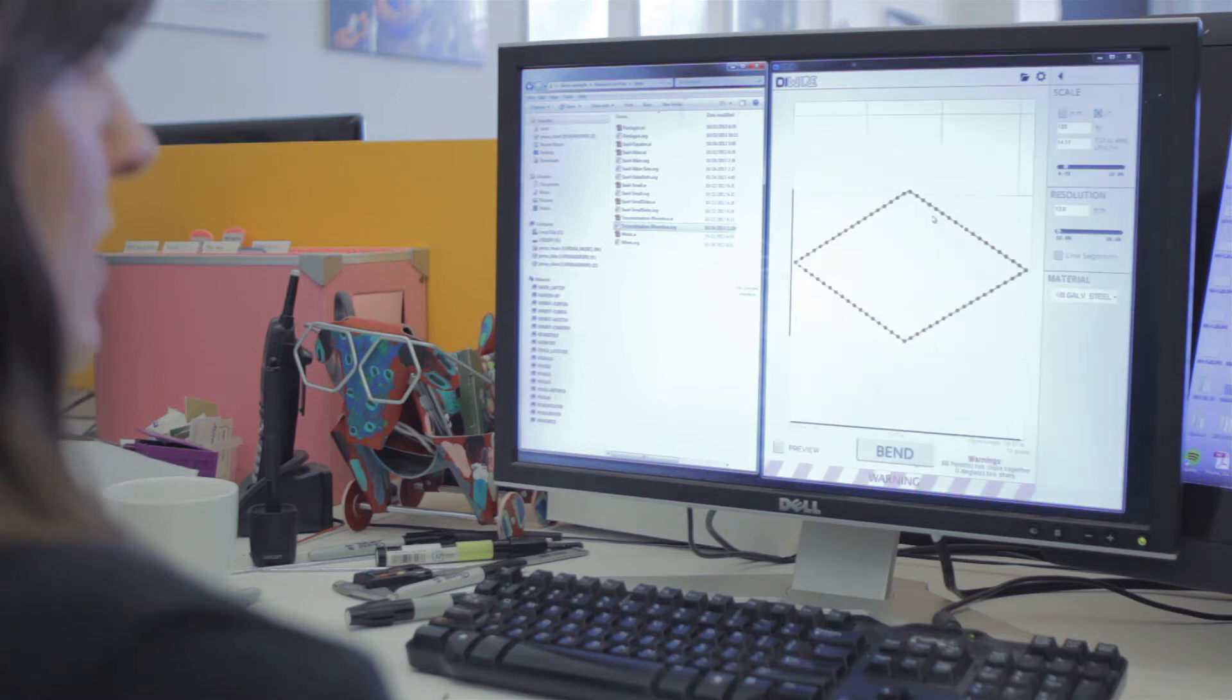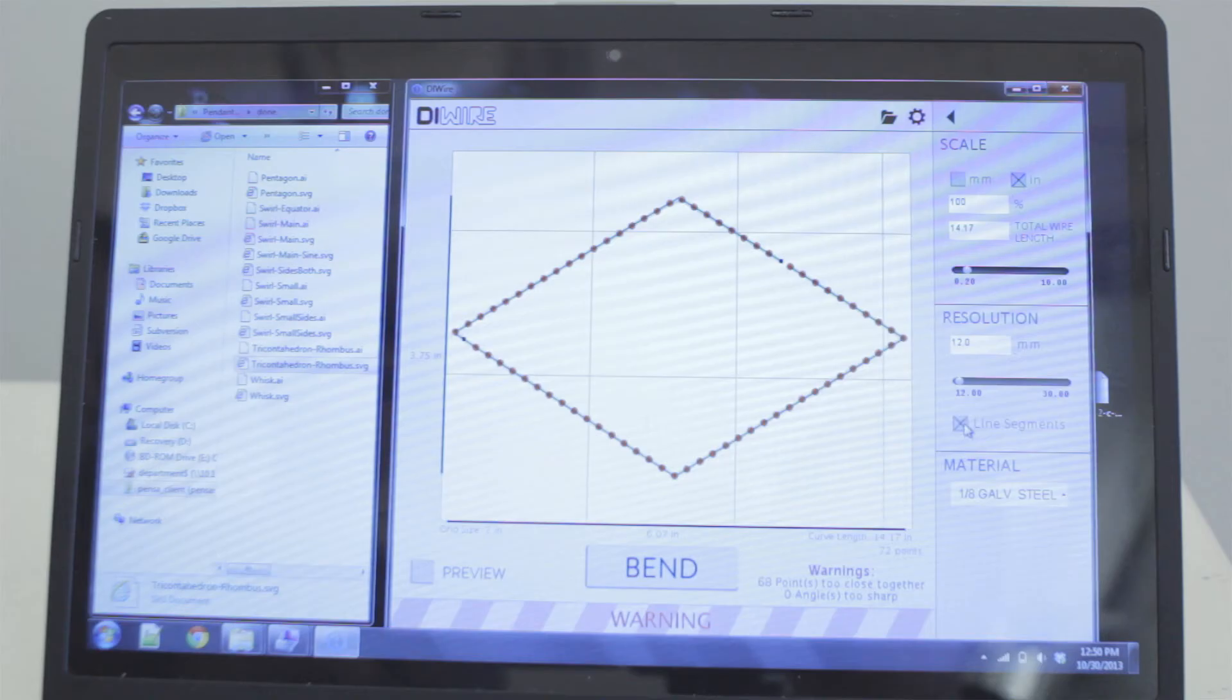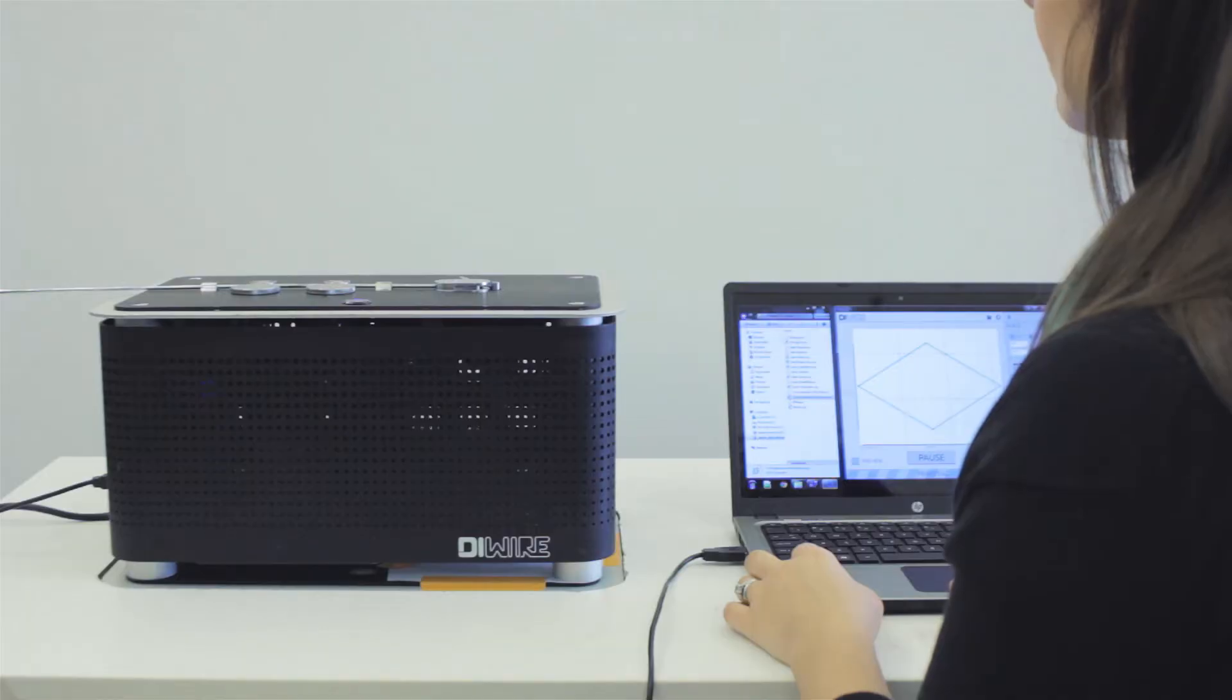The way the DIYer works is you take your 2D curve, save it as an SVG file and pour it into our software and press bend.